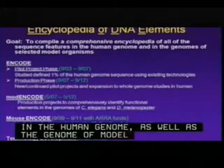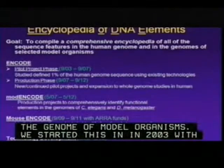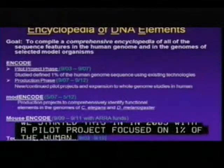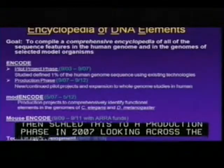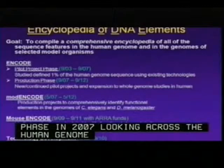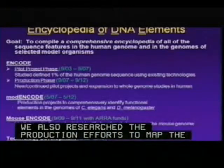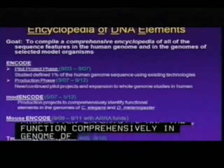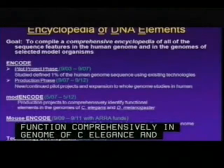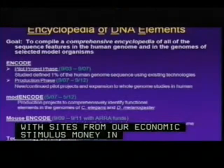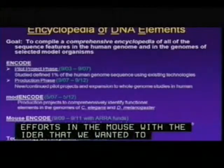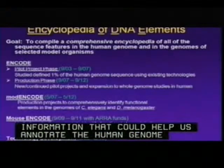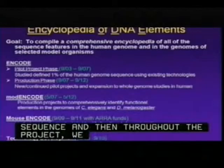We started in 2003 with a pilot project focused on 1% of the human genome sequence, then scaled to a production phase in 2007 looking across the entire human genome. In 2007 we also launched the modENCODE project — production efforts to map functional elements comprehensively in the genomes of C. elegans and Drosophila melanogaster. With economic stimulus funds in 2009 we also funded a limited production effort in the mouse, and throughout this project we have supported several rounds of technology development.